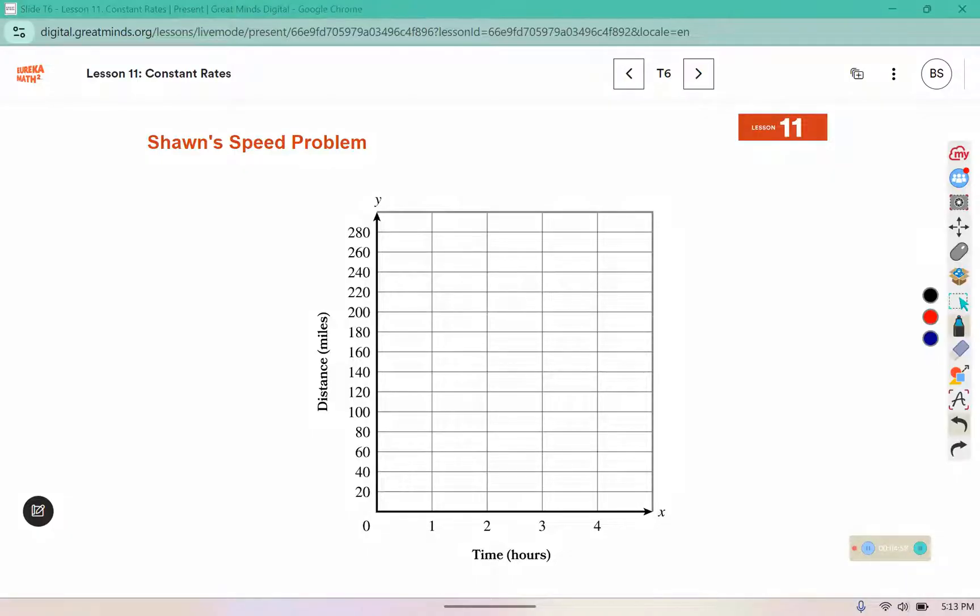To graph this, we can go from 0,0, 1,70, in 2 hours they go 140, 3 is 210, 4 would be 280, and they can drive for partial hours like 2½ or 2 hours and 20 minutes. So we can actually draw a line connecting those points, like you see here. We also see the unit rate is represented in this graph. It goes over 1 in the hours and up 70 for the miles.